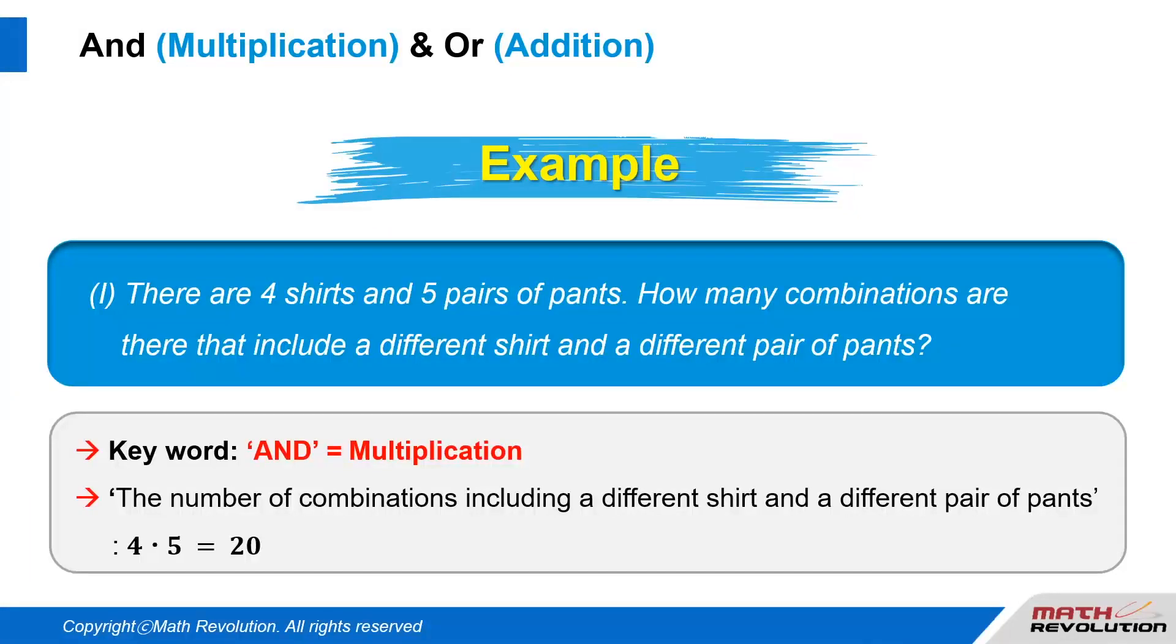The keyword AND connecting the number of shirts and pants stands for multiplication. So, the number of combinations including a different shirt and a different pair of pants is simply 4 times 5 equals 20.